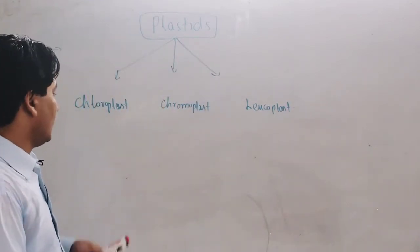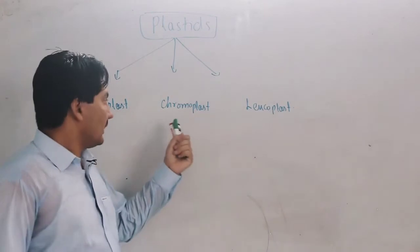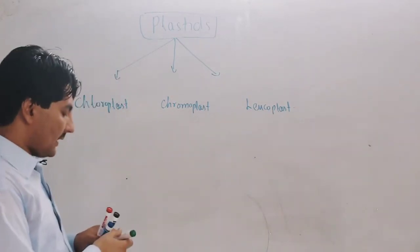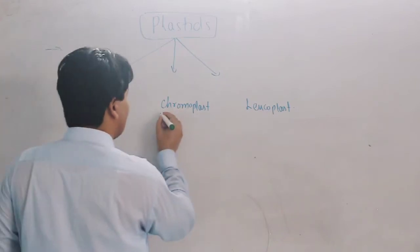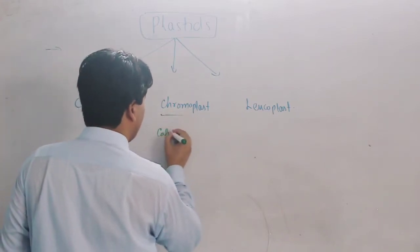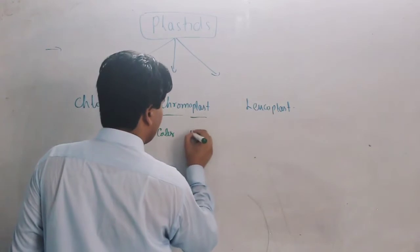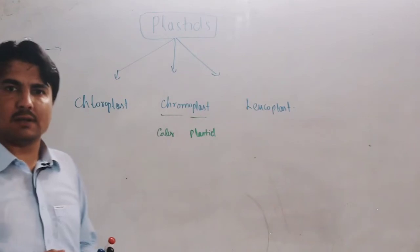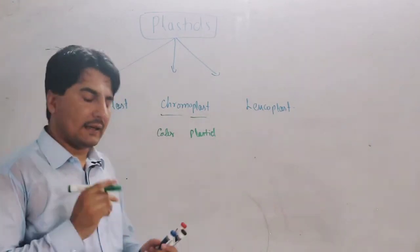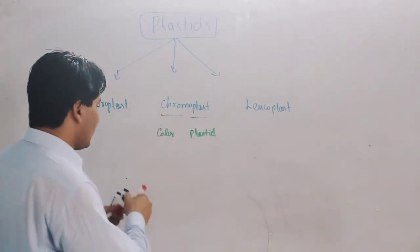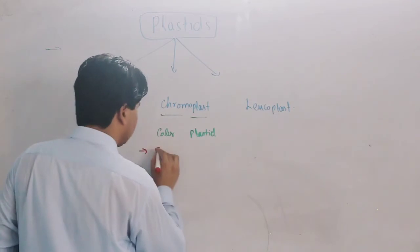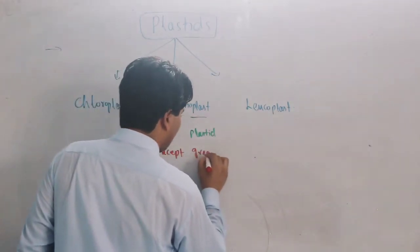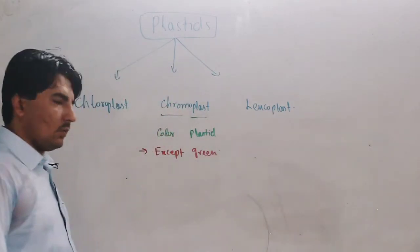We will discuss the details of chloroplast, but first chromoplast and leucoplast. Chromoplast - the name indicates chromo means color and plast means plastic. So chromoplast is basically colored plastic, and it contains colors except green.